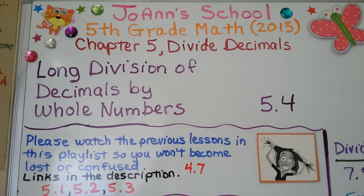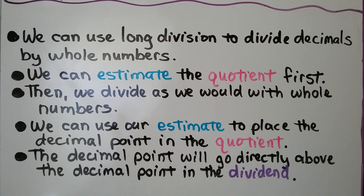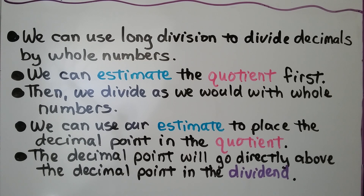Lesson 5.4: Long Division of Decimals by Whole Numbers. We can use long division to divide decimals by whole numbers. We can estimate the quotient first, then we divide as we would with whole numbers. We can use our estimate to place the decimal point in the quotient. The decimal point will go directly above the decimal point in the dividend.